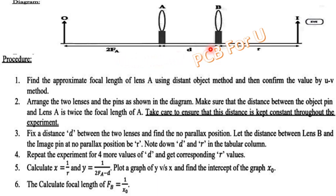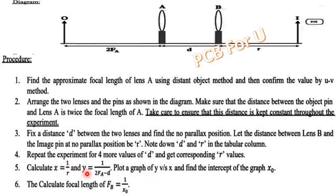If you have a copy of D and R, you can use D and R. This is the final image distance. X equals 1 by R, and Y equals 1 by (2fe minus D).